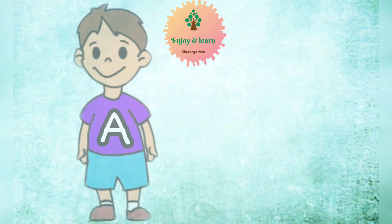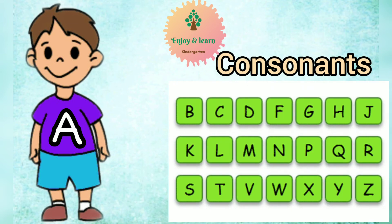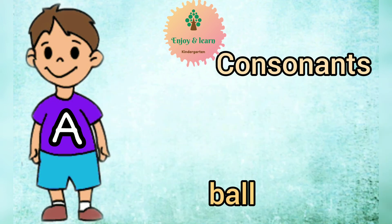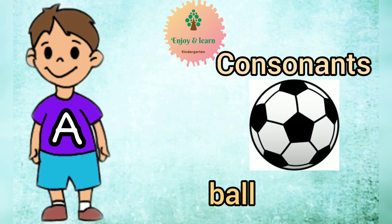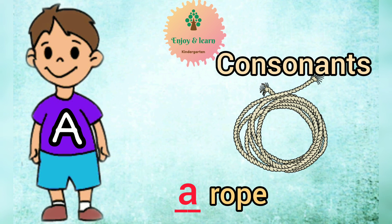Now the elder sibling 'a' is used before words starting with consonant sounds. For example, the sound of ball is b, so we will use article 'a': a ball, a key, a rope.